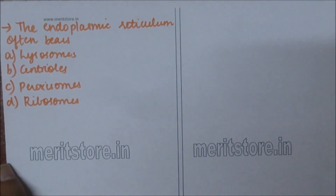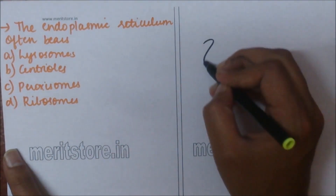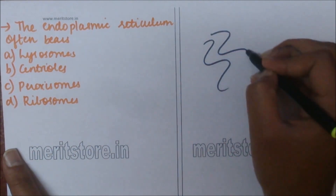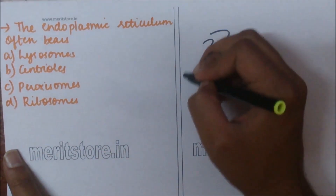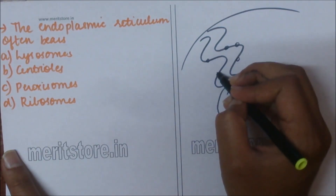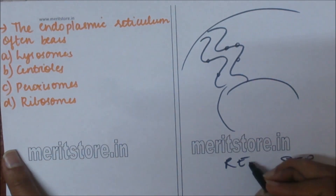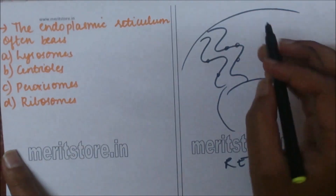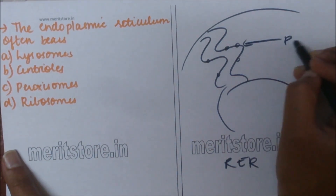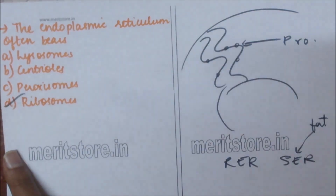The endoplasmic reticulum often bears: A) lysosomes, B) centrioles, C) peroxisomes, D) ribosomes. The endoplasmic reticulum connects the nuclear membrane to the cellular membrane. It consists of two types: RER and SER. Rough endoplasmic reticulum has ribosomes which help in protein synthesis, and smooth endoplasmic reticulum is for fat storage and synthesis. So option D is the correct answer.